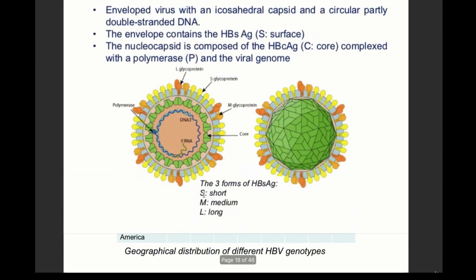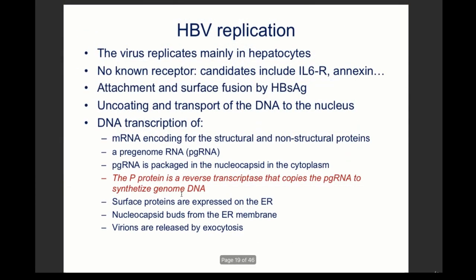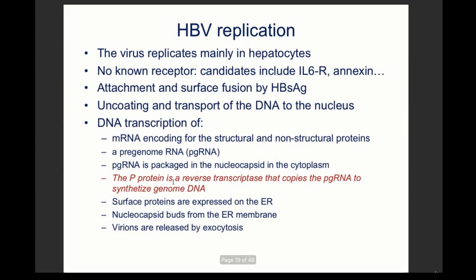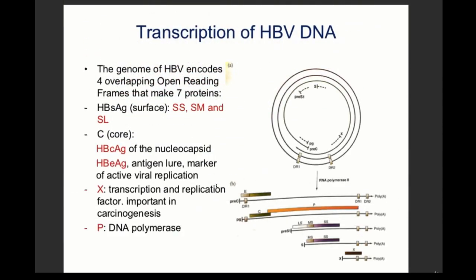The protein P — a reverse transcriptase — is packaged with the nucleocapsid. The surface proteins expressed on the ER envelope the virus, which is then exocytosed. Outside the cell, after exocytosis, the P protein reverse-transcribes the RNA into a partial double-strand DNA and its intrinsic RNase activity degrades the RNA, leaving a partial double-strand DNA with the P protein inside the nucleocapsid.